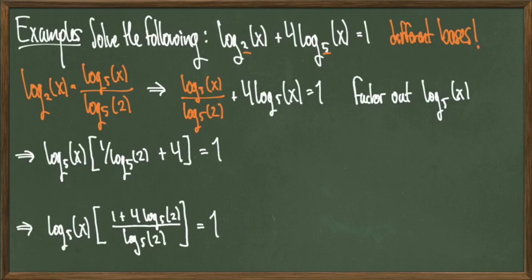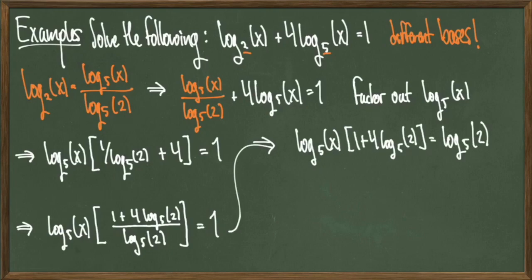Next I'll multiply both sides by log₅(2) to get log₅(x) × (1 + 4log₅(2)) = log₅(2). In my next step, I will divide both sides by the quantity 1 + 4log₅(2) to get that log₅(x) = log₅(2)/(1 + 4log₅(2)).